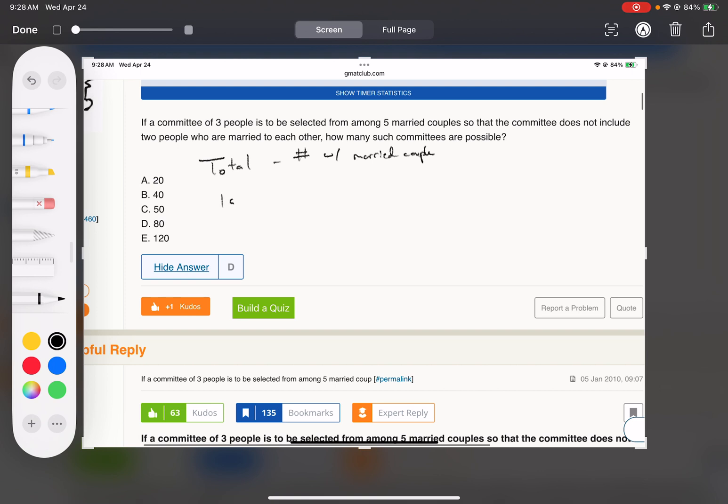So the total: there are ten total people, choosing three for a three-person committee, minus the committees we don't want, which is the committees that have a married couple on them.